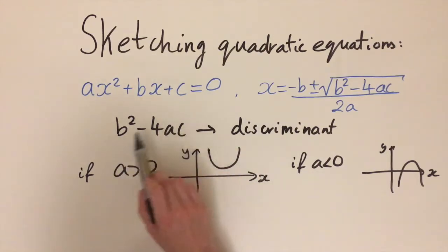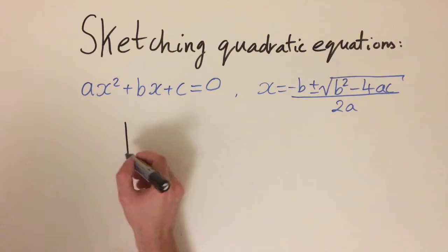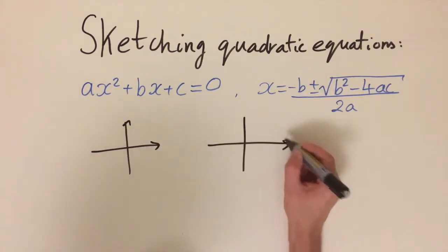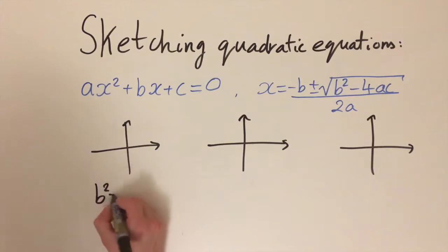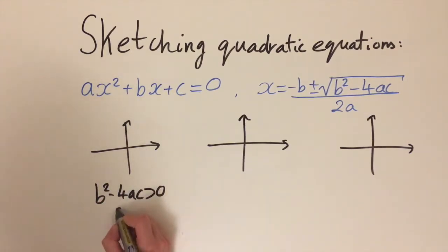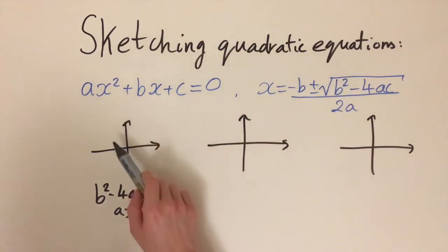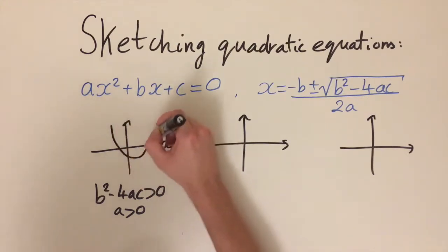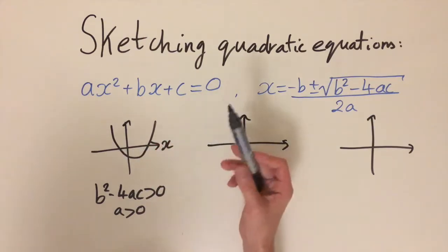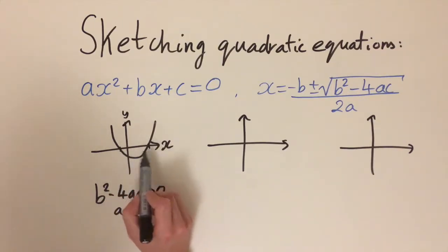Now we're going to combine that with changing the value of the discriminant, looking at three different cases. If b squared minus 4ac is positive and a is positive, we get the square root of a positive number and two separate solutions. This tells us the graph crosses the x-axis at two separate points, giving a parabola that looks something like this — two distinct crossings.